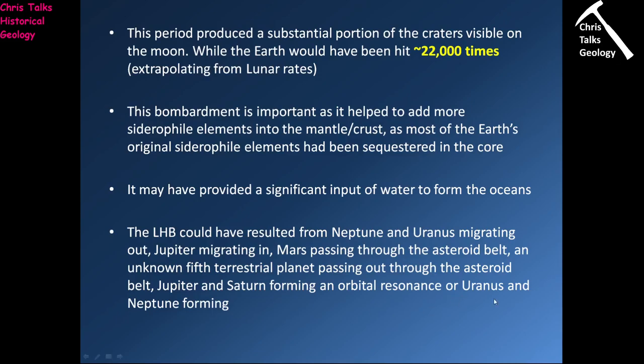Or possibly the most straightforward answer is that the Late Heavy Bombardment was simply due to Uranus and Neptune forming in the first place — their appearance and gravity would have disturbed the comet-rich Kuiper Belt, causing comets to be thrown into the inner solar system. There are quite a few reasons why this could have happened, but the LHB is quite important: it adds siderophile elements, adds water, and also does quite a lot of damage to the earth's crust.